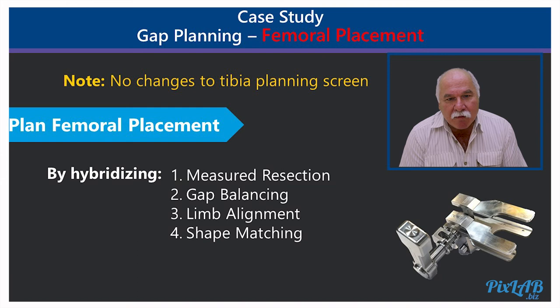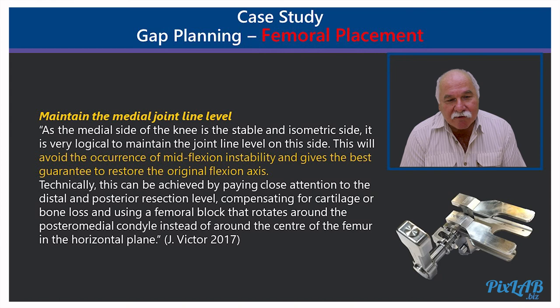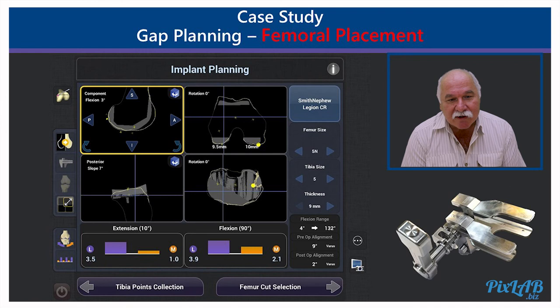This is what we arrived at: the blue depicts the lateral tension and the orange depicts the medial tension. We next move on to femoral planning. We plan the femoral placement by hybridizing the four methods mentioned: measured resection, gap balancing, limb alignment, and shape matching. The medial side of the joint line is very important as this is the stable side where the knee rotates. That is where we toggled the femoral planning to.